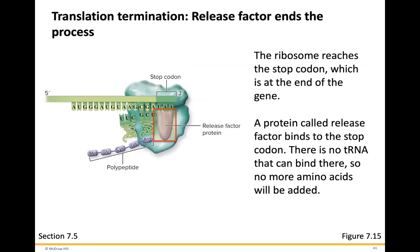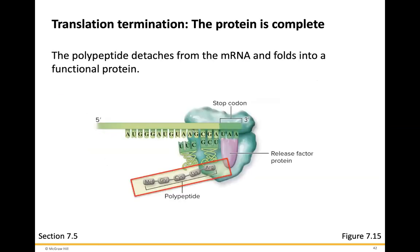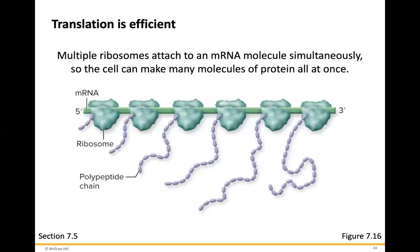Translation terminates when the ribosome reaches a stop codon at the end of the gene. A protein called a release factor binds to the stop codon — there is no transfer RNA that can bind there. No amino acids are added, and the protein falls off assembled. The polypeptide or protein detaches from the messenger RNA and folds into a functional protein. Translation is an efficient process — multiple ribosomes attach to a messenger RNA molecule simultaneously, so the cell can make many protein molecules at once.